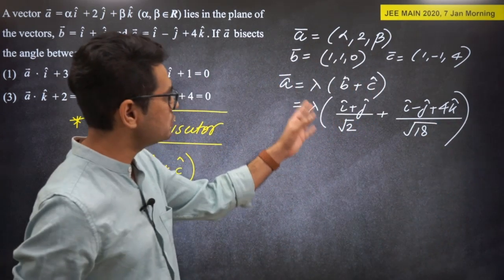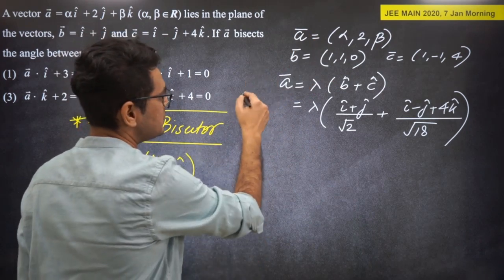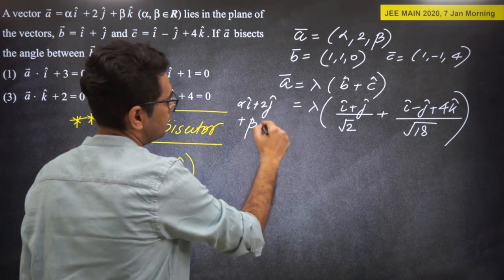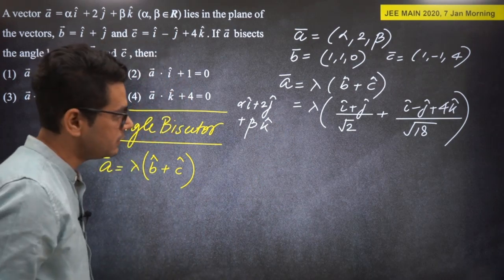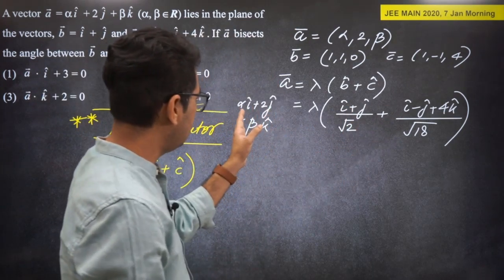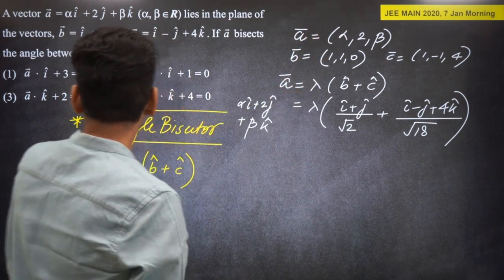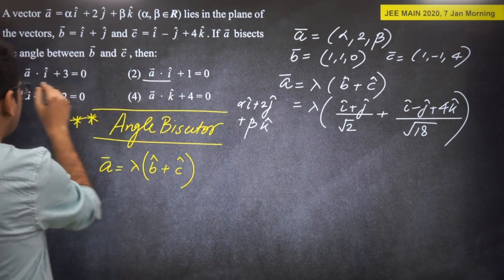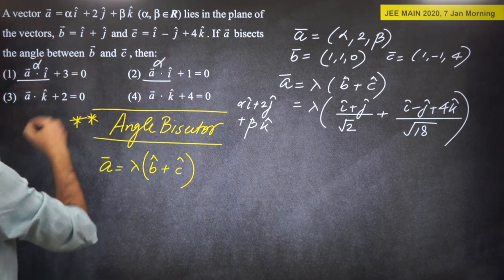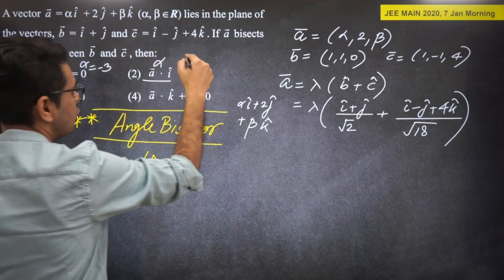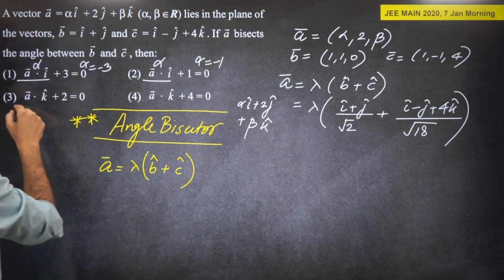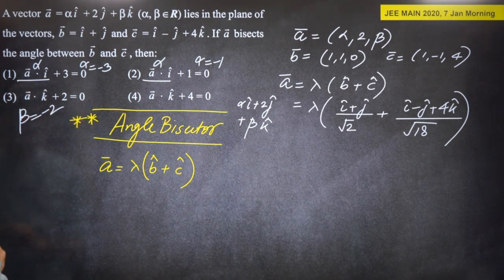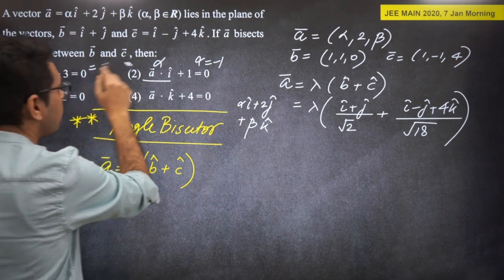Looking at the options, which give values like alpha = -3, alpha = -1, beta = -2, etc., we should keep glancing at options during the paper. A·î = alpha. From the j-component equation: 2 = lambda/√2 - lambda/3√2, which gives lambda*(1 - 1/3)/√2 = 2, so lambda = 3√2. Then alpha = lambda/√2 * (1 + 1/3) = lambda/√2 * (4/3) = 4.